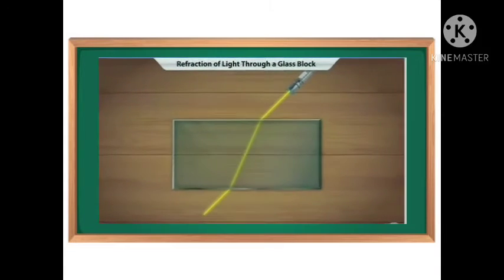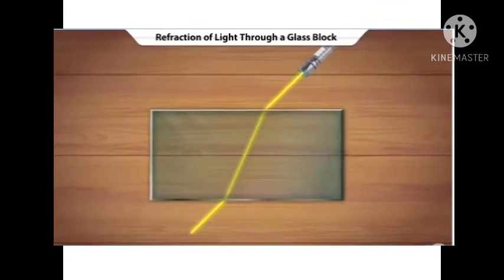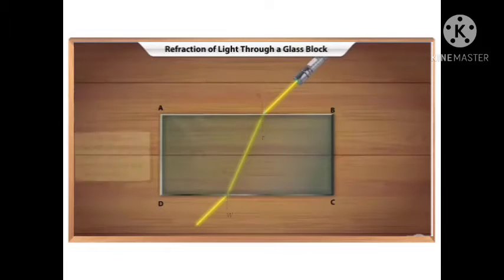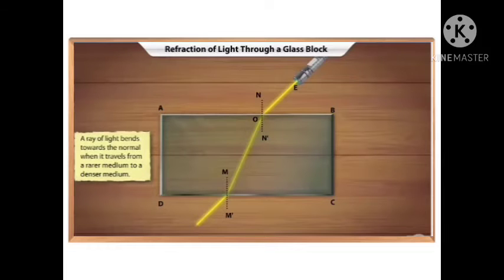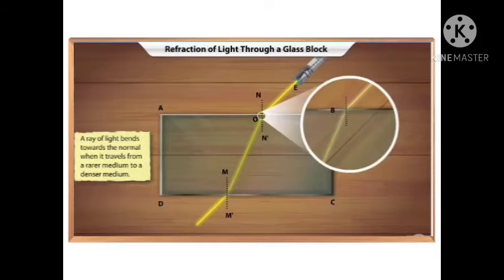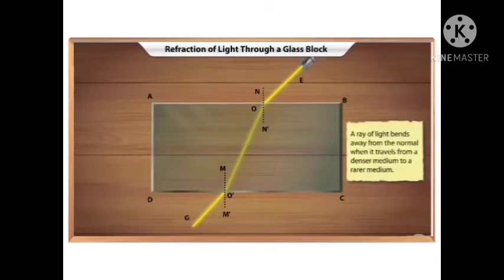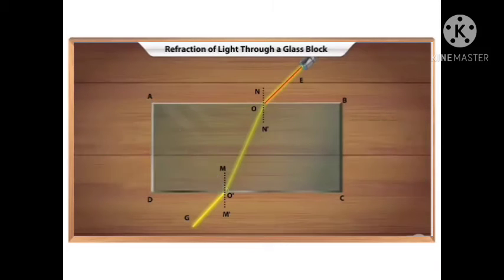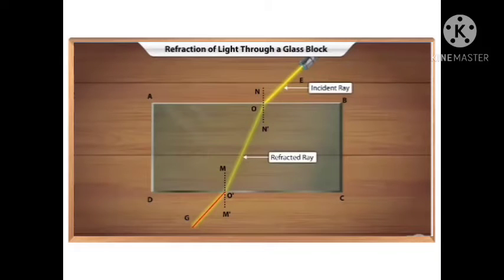Let us view a short animation. A light ray falls on a rectangular glass block and undergoes refraction. The light ray changes direction twice at the surfaces separating the two transparent media. Ray EO bends toward the normal as it enters the denser medium (glass) from the rarer medium (air). At O', the light ray leaves the glass and enters air, moving away from the normal. EO is the incident ray, OO' is the refracted ray, and O'G is the emergent ray.